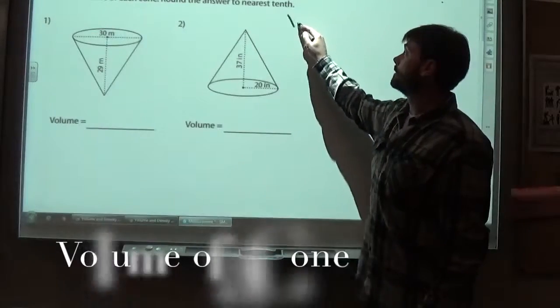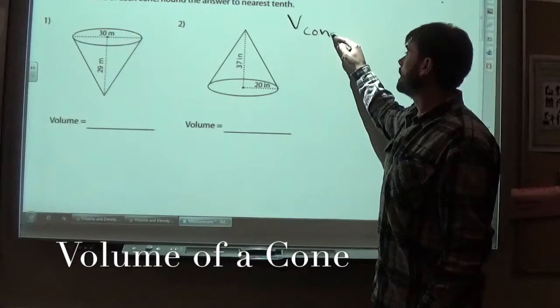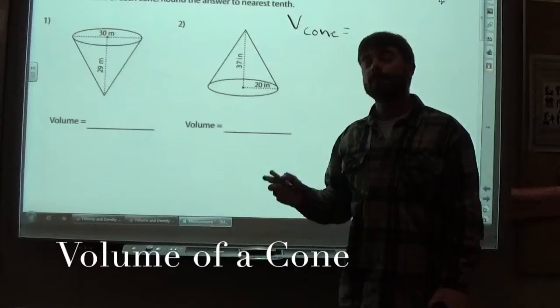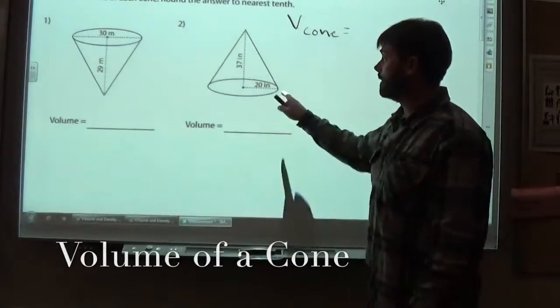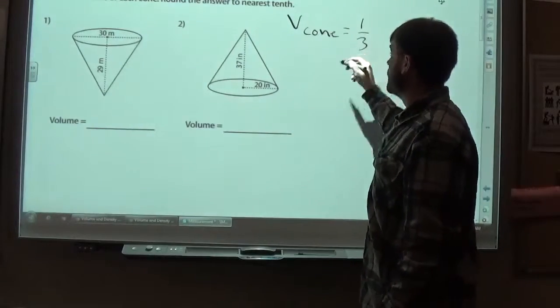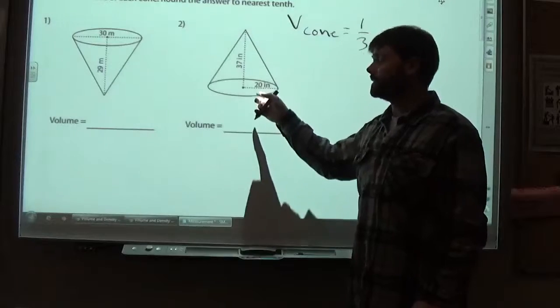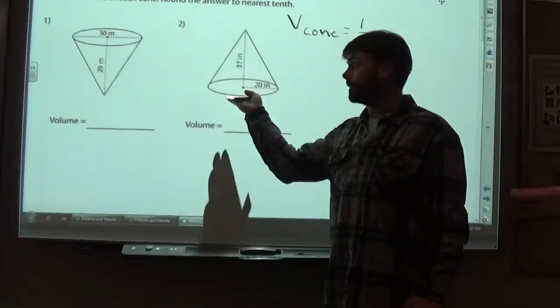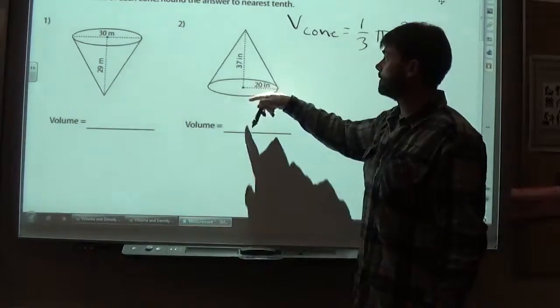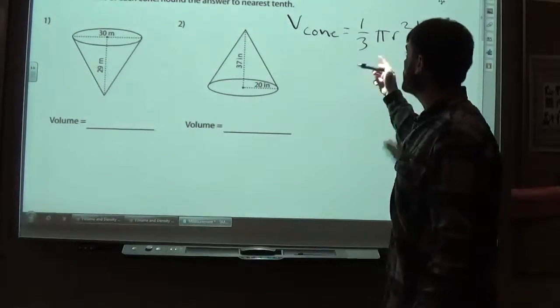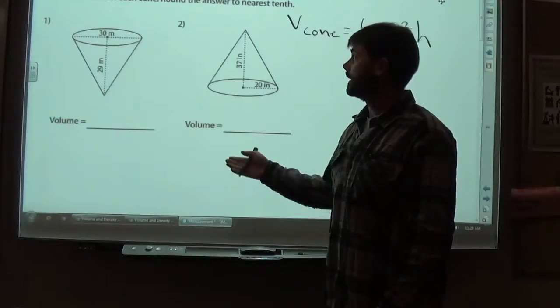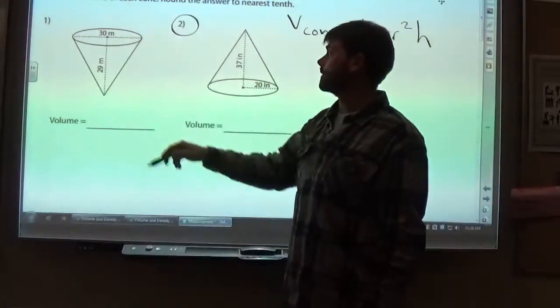So the equation to find the volume of a cone, it can be listed a few different ways, but it's basically one-third the base times the height. Now the base of a cone is a circle, so when we're looking at a third of the base multiplied by the height, if the base is a circle, that means the area for the base is pi r squared. So it looks something like this, and then you multiply that by the height of the cone. I'll just do problem number two here as the example for this first one.